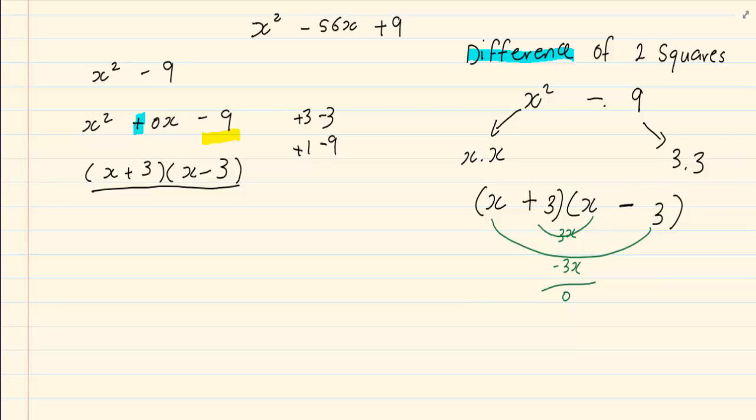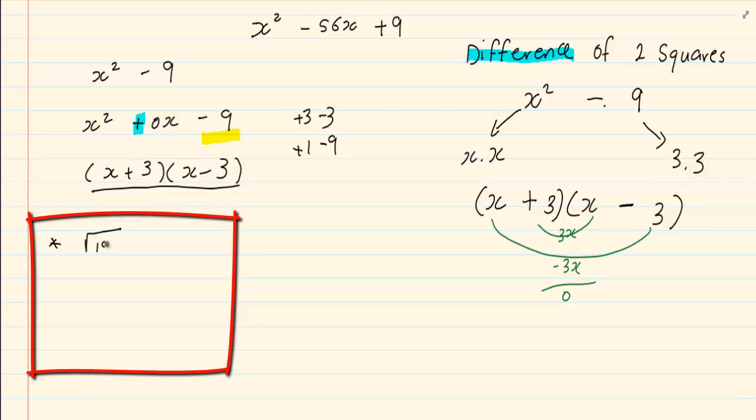Now let's go through the steps. Number one, you are going to get the root of the first term. Then you are going to get the root of the second term. And number three, you are going to put it in your two brackets remembering all the time that one is plus and one is minus.